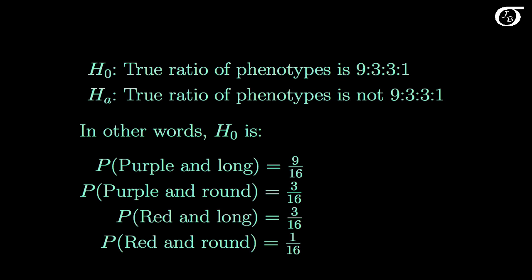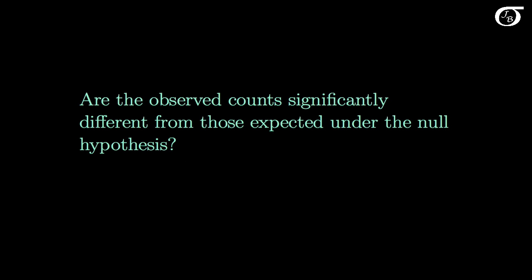We could write this null hypothesis out a little differently in terms of probabilities of the different categories. The 9 represents purple flowers and long pollen grains, so the null hypothesis states that the probability of getting a plant with purple flowers and long pollen grains is 9 out of 16, and so on for the other four categories. We are asking: are the counts observed in the sample significantly different from those expected under the null hypothesis?